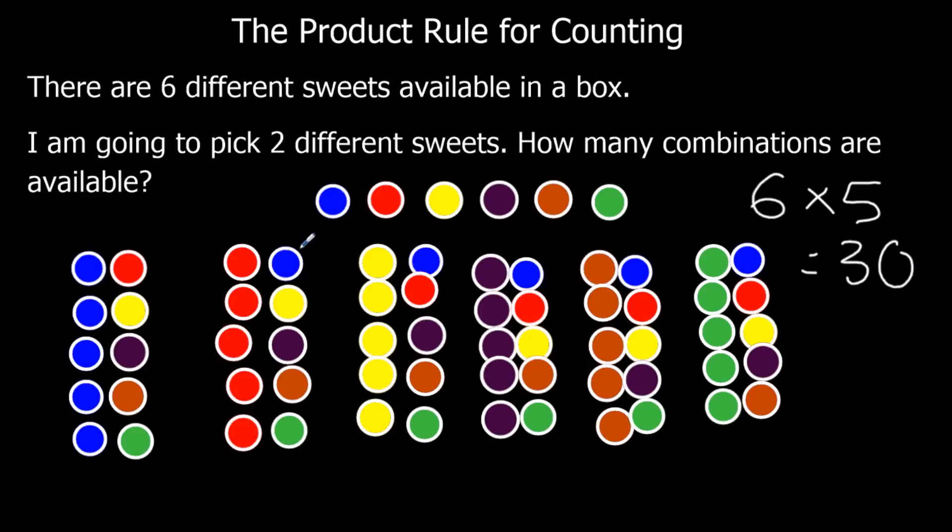but what we'll be able to find is there are doubles everywhere. So I've got blue, red here, and blue, red here. So there's two of them. I've got blue, yellow here, and I have yellow, blue here. I've got blue, purple here, and purple, blue here. So every one I've got a double. So there are the same sweets but the other way around.